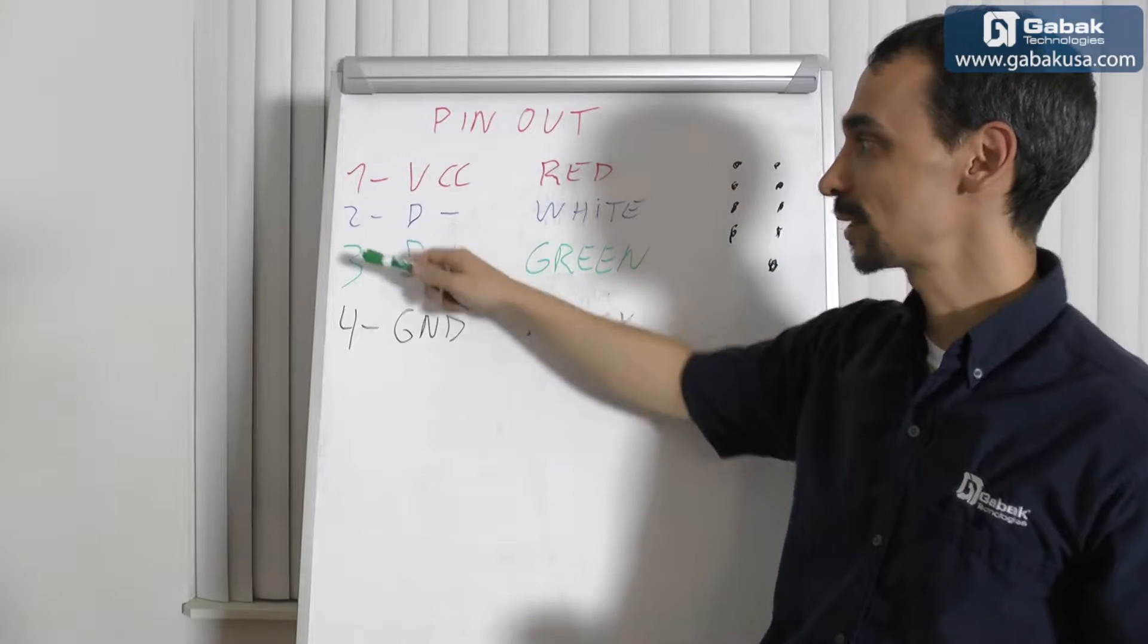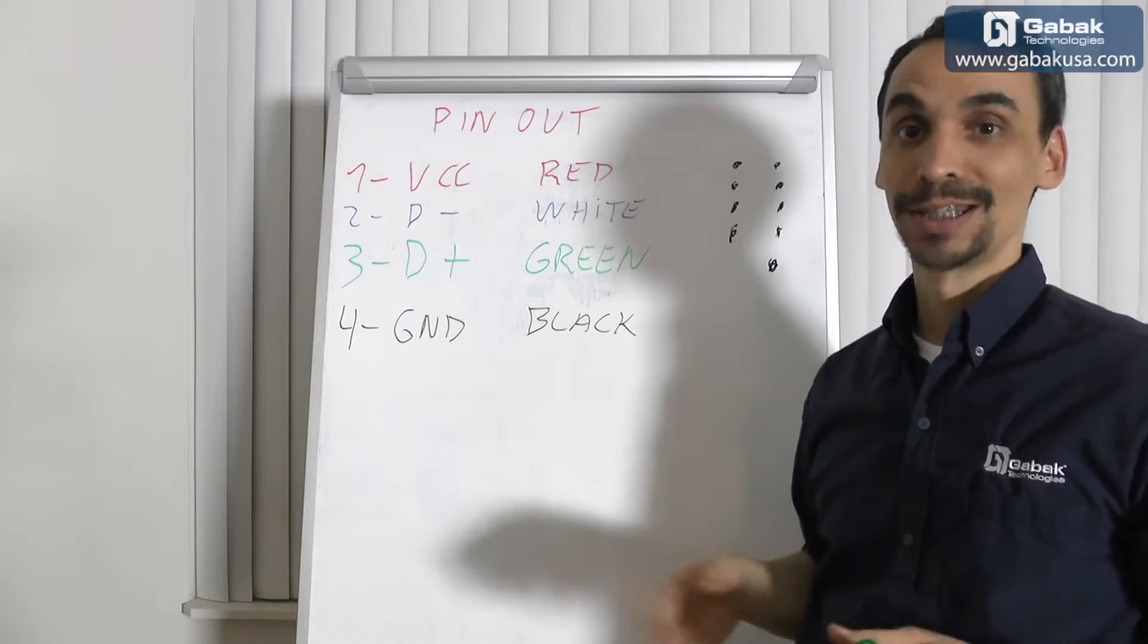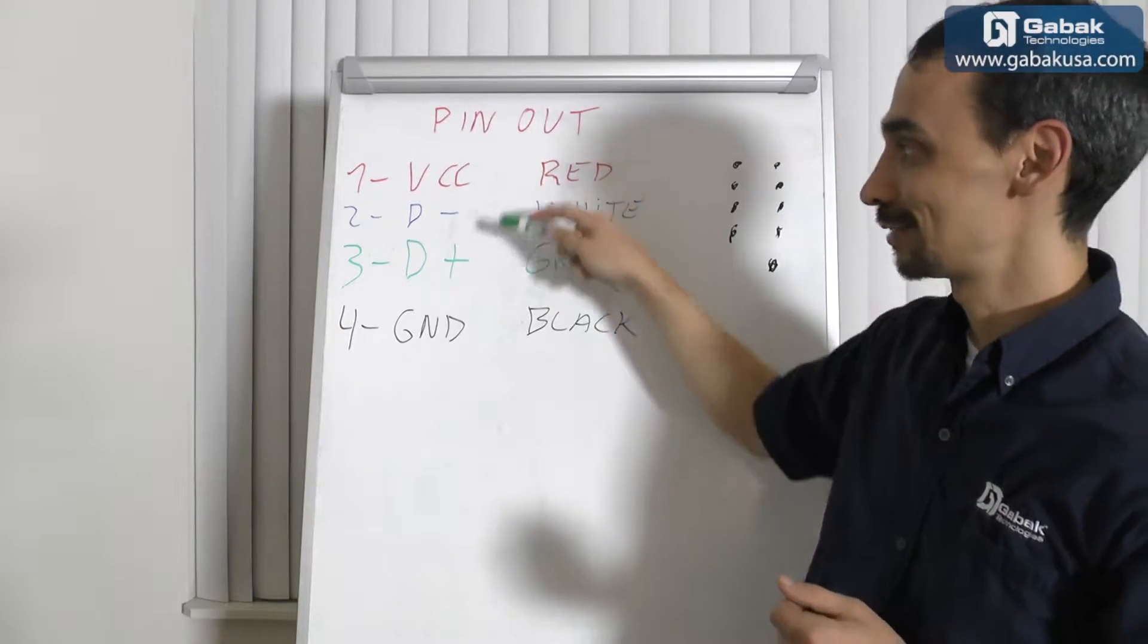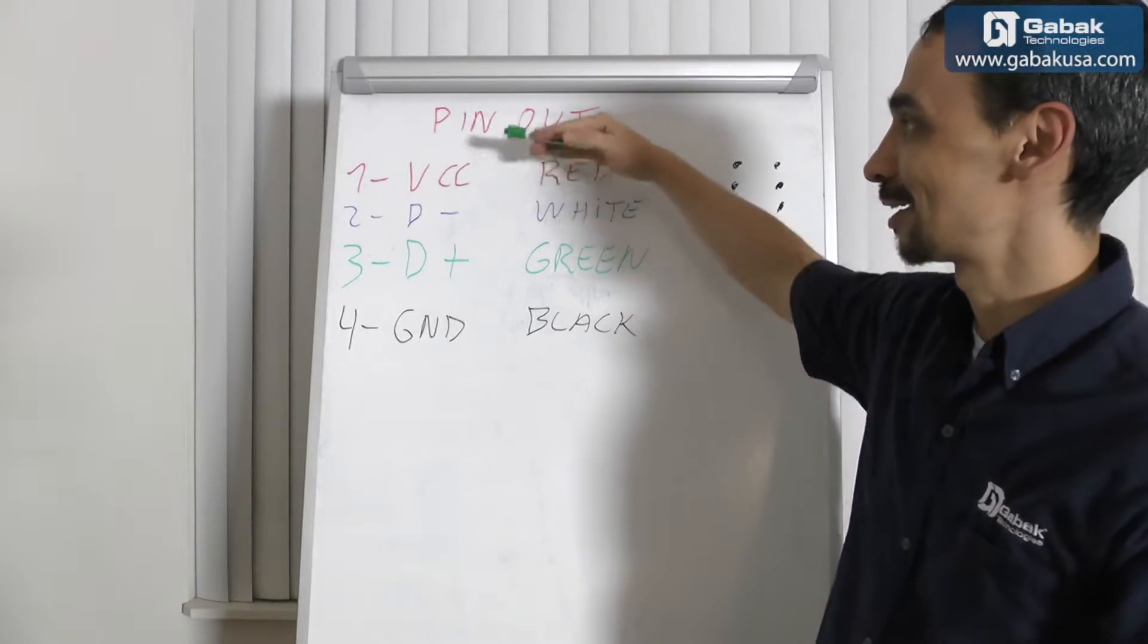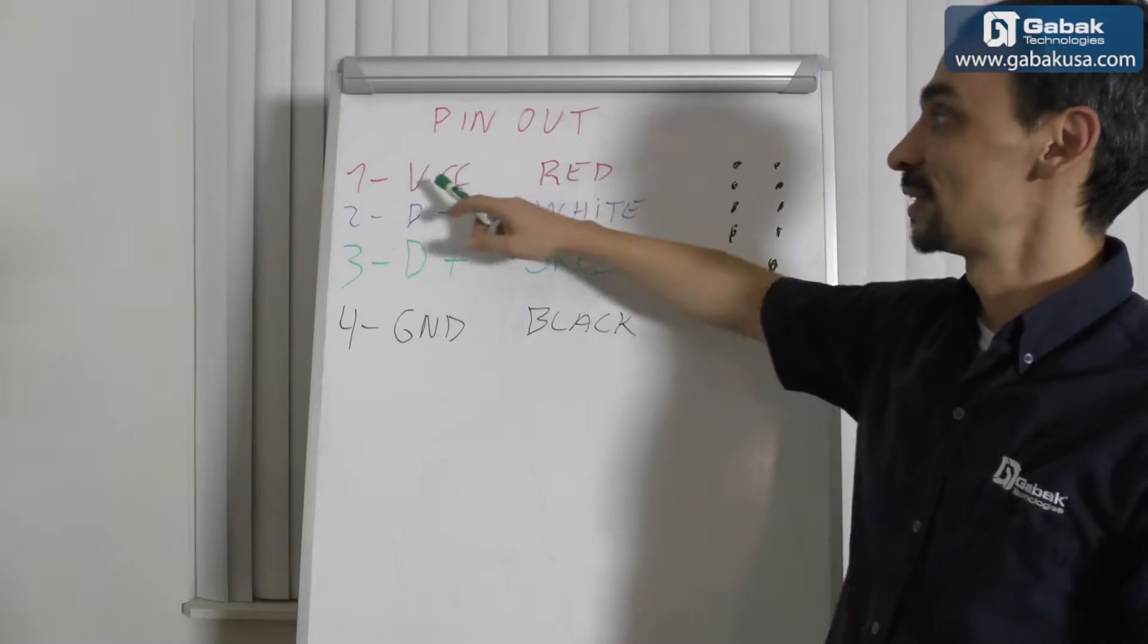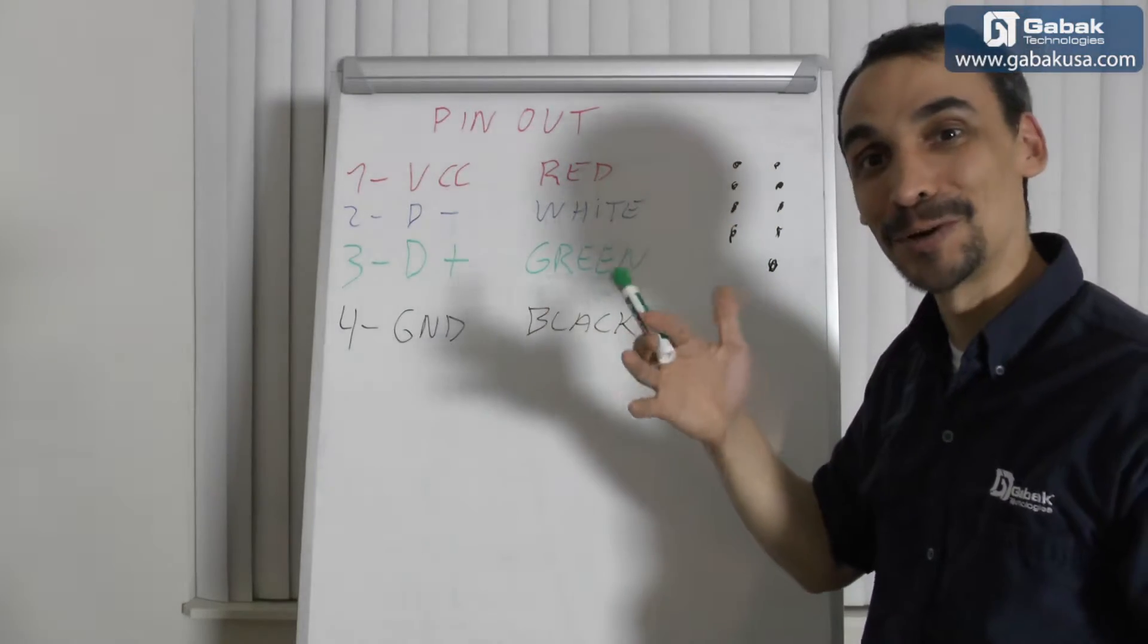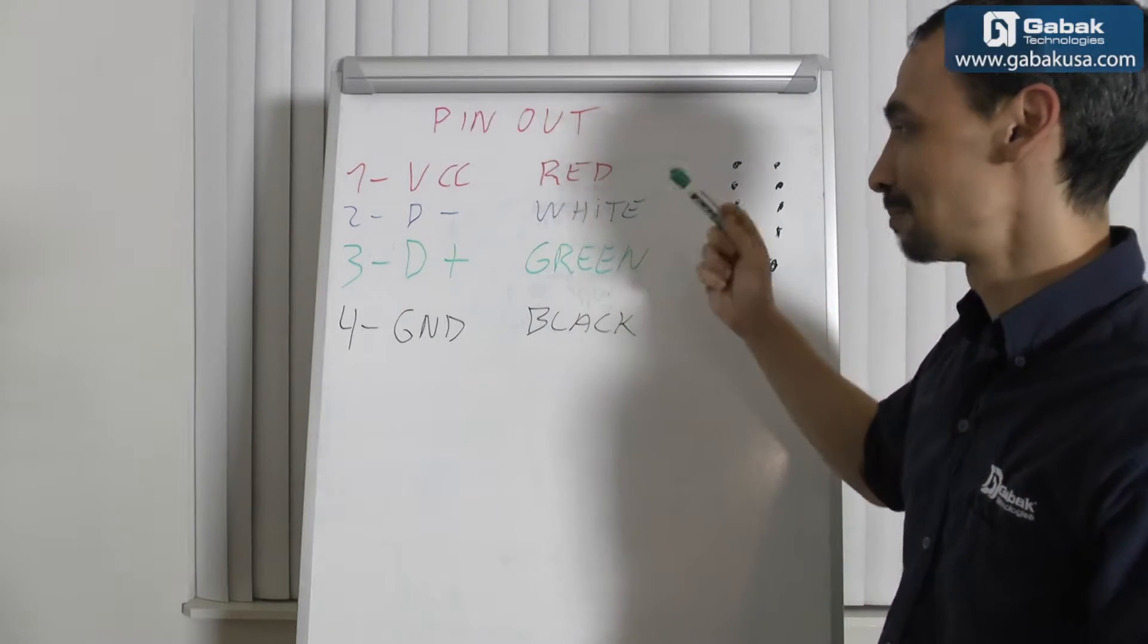That is port number one. Then two and three is the data, and port number four is the ground. So it's positive and negative, positive and negative. I use this color because the cable, the red one, is for the positive.